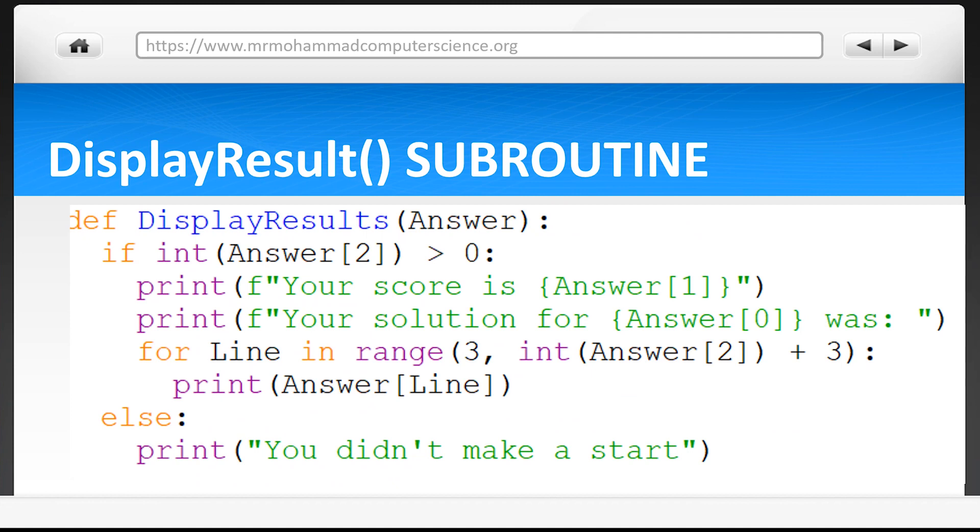First we see an if statement is being used to check if the value in answer position two or index two is greater than zero. If it is, they are showing their score by outputting what's inside answer index one. They are then shown their solution as in what they did.